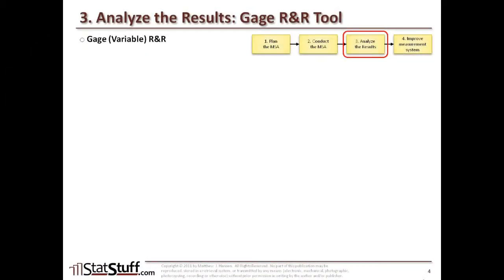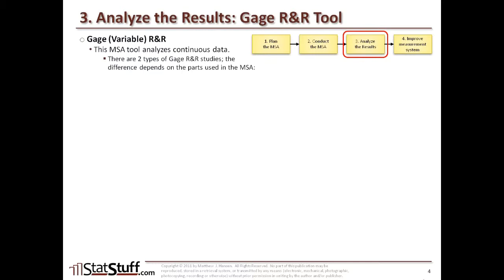Now let's talk about the two different types of gauge R&R tests and how to set them up in Minitab. The gauge R&R tool, also known as the variable R&R tool, analyzes continuous type of data. There are two types of gauge R&R studies, and the difference depends on the parts used within the MSA. A crossed gauge R&R study is used when the same parts are used by each operator for each trial, similar to a blind study.